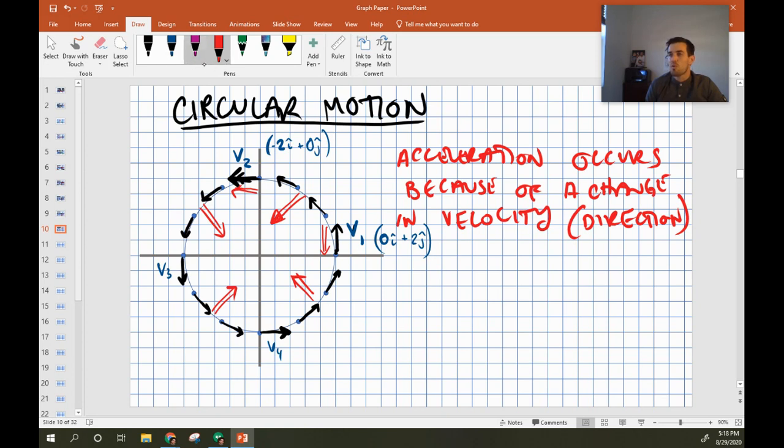But we have a certain term for this kind of acceleration. This is called a centripetal acceleration. A centripetal acceleration is any acceleration that is going towards the center of a turn. So because these are pointed at the center, or at least close enough for government work, we call this centripetal acceleration.